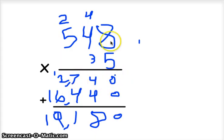And then you multiply, you put the magic 0 there, and multiply 8 times 3, which is 24.